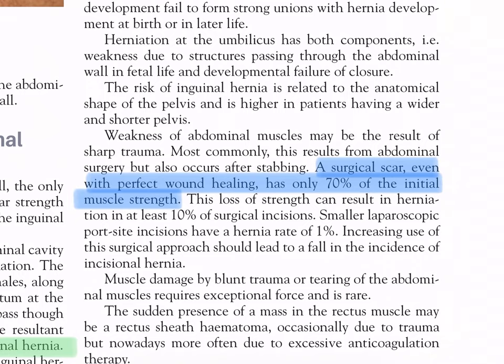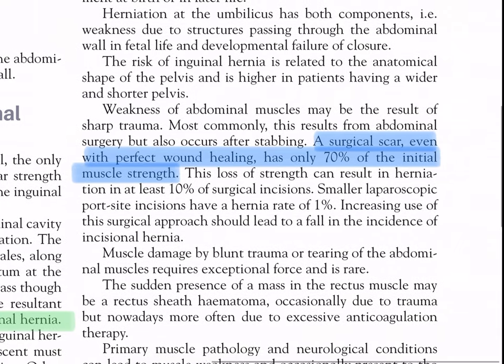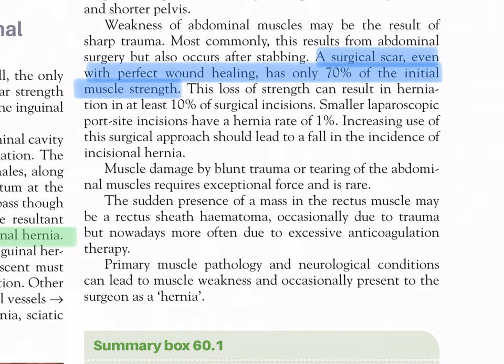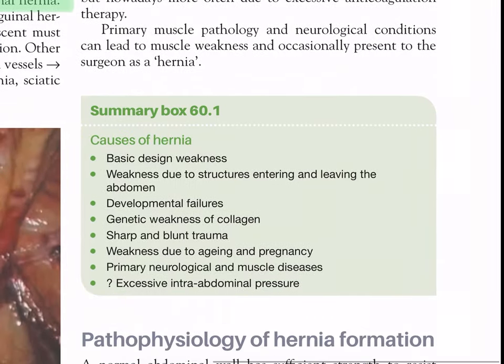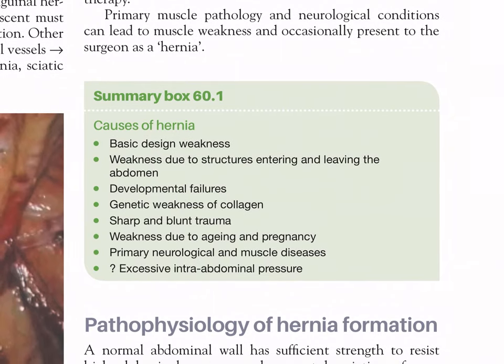Smaller laparoscopic port-site incisions have a hernia rate of 1%, and increasing use of this surgical approach should lead to a fall in the incidence of incisional hernia. Muscle damage by blunt trauma or tearing is rare. A sudden mass in the rectus muscle may be a rectus sheath hematoma, occasionally due to trauma but more often due to excessive anticoagulation therapy. Summary of causes of hernia: basic design weakness, weakness due to structures entering and leaving the abdomen, developmental failures, genetic weakness of collagen, sharp and blunt trauma, weakness due to aging and pregnancy, primary neurological and muscle diseases, and excessive intra-abdominal pressure.